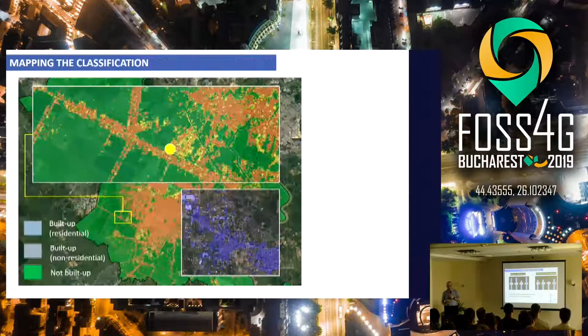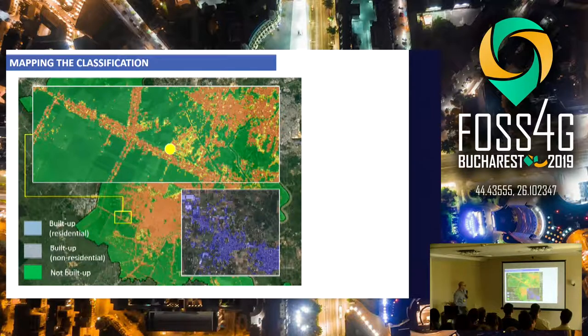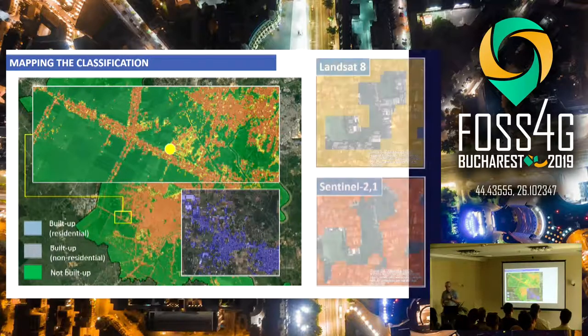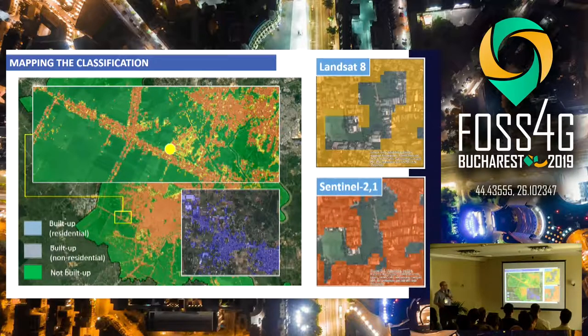You can see a map of the classification, and we can even identify individual structures on the map, just to show the difference between Landsat and Sentinel.